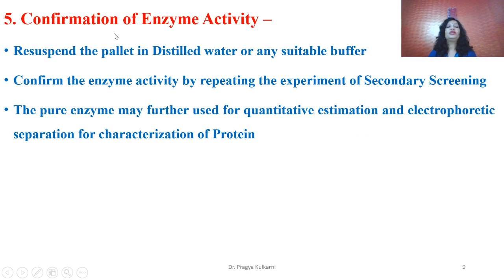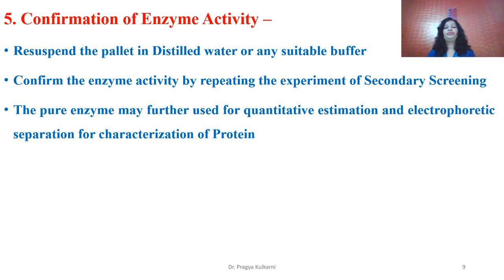The next step is confirmation of enzyme activity. The enzyme pellet after purification is suspended in distilled water or any other suitable buffer and confirmed for the presence of xylanase activity. The confirmation is done through the secondary screening method. This pure enzyme after confirmation is ready for estimation. The estimation is done on the basis of a quantitative method, and further the enzyme properties can be characterized through SDS-PAGE or protein gel electrophoresis.